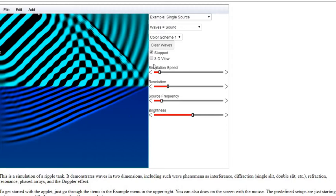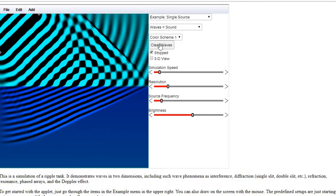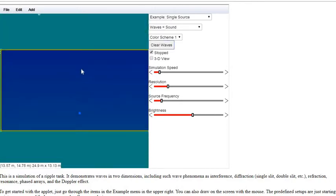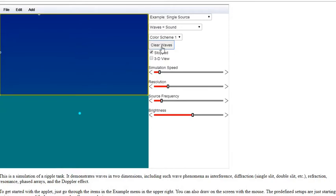So it's a simple next step to think about what would happen if our water goes from shallow to deep. So I'm just going to move the shallow portion of our ripple tank to be underneath the source. And then we'll see what happens.